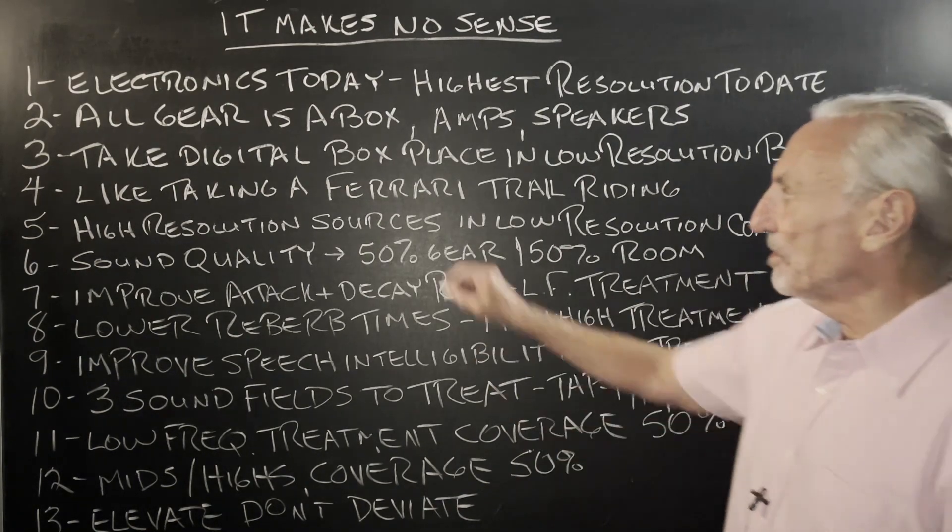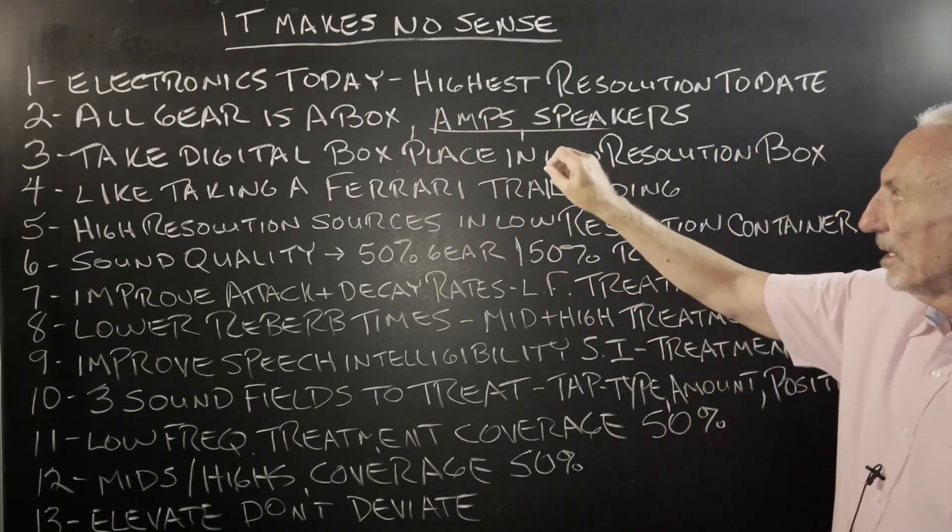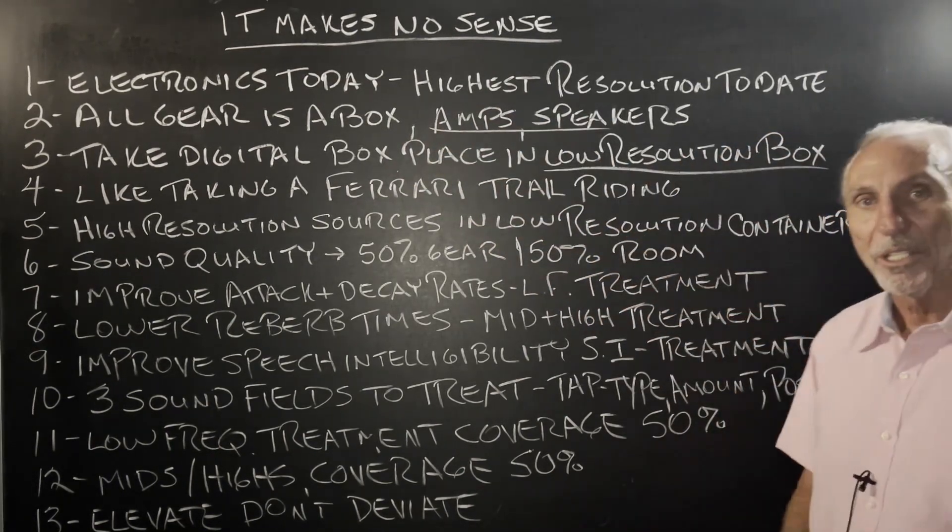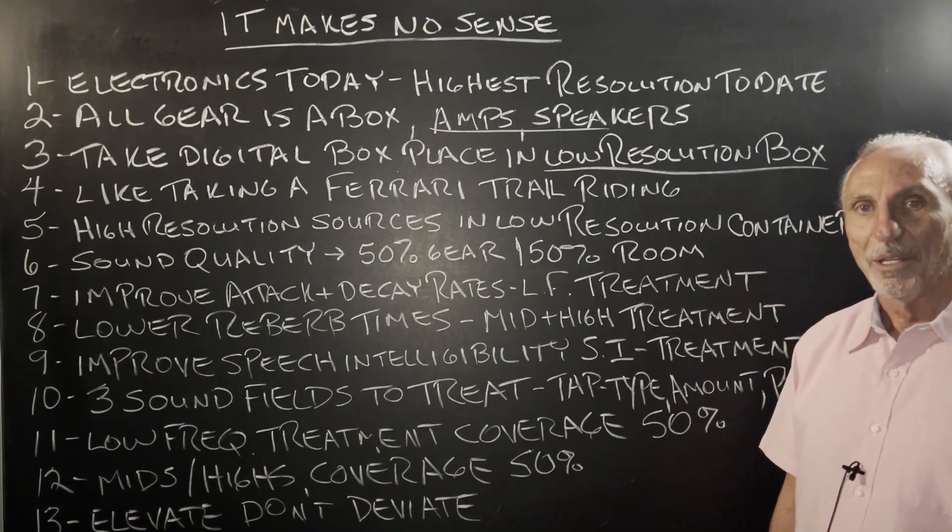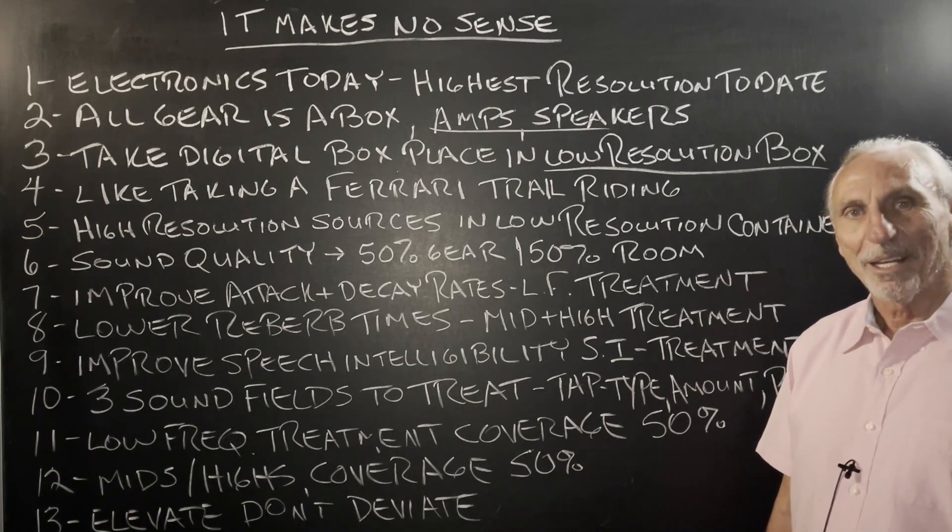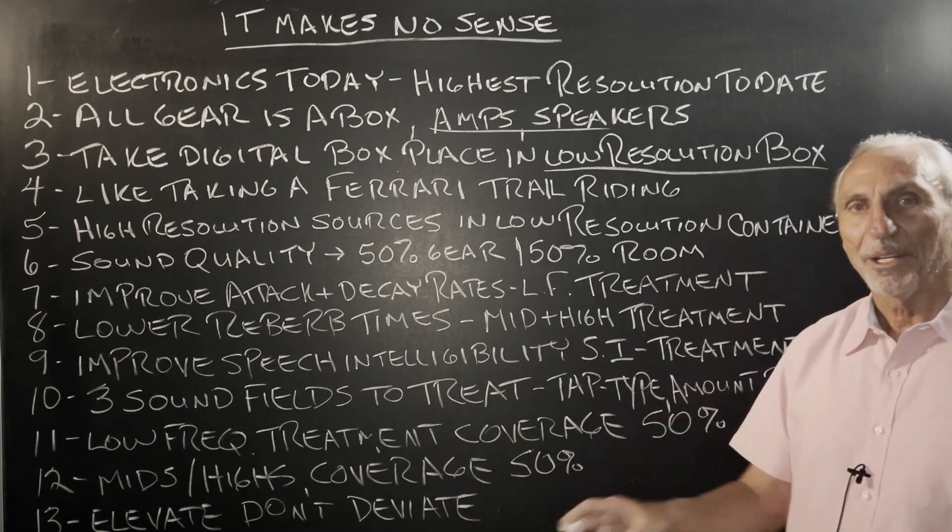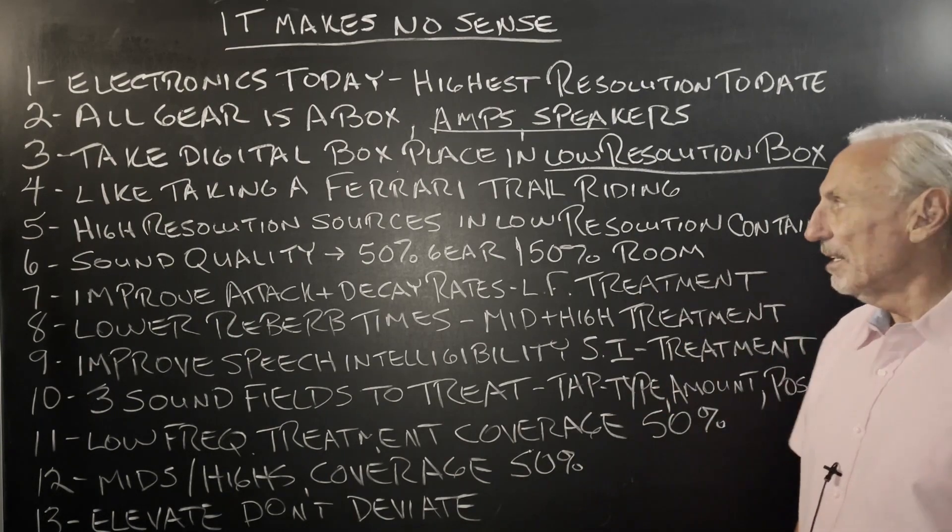So we take this digital box, because everything's a box, right? We take this digital box, which is very high resolution, and we stick it in a low resolution room. A very low resolution room. Does that make any sense? It really doesn't. There should be some linearity and some coherence in thought to that.